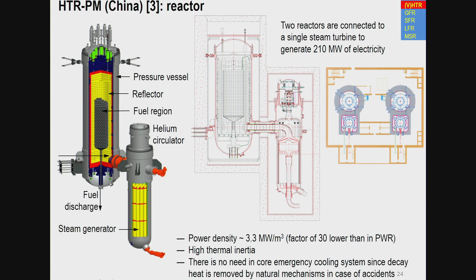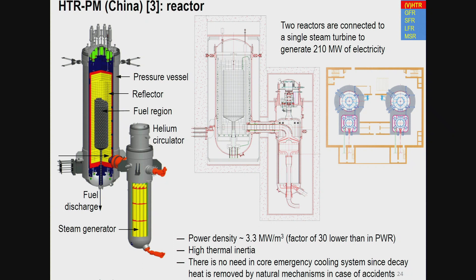The HTR-PM is a relatively classical gas-cooled reactor with reactor vessel and power conversion system hosting a steam generator. Fuel pebbles are inserted from above and discharged from below. There is a graphite reflector and containment. Two reactors are connected to a single steam turbine. Power density is 3.3 MW/m³ — a factor of 30 lower than PWR — creating very high thermal inertia that makes this reactor walk-away safe.